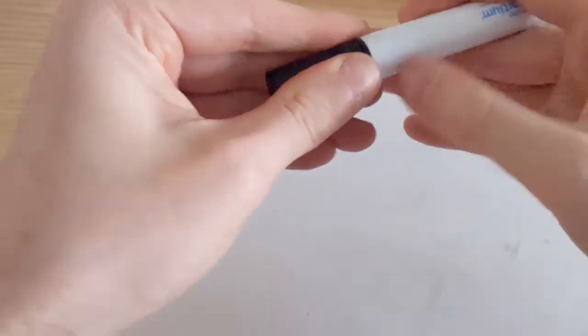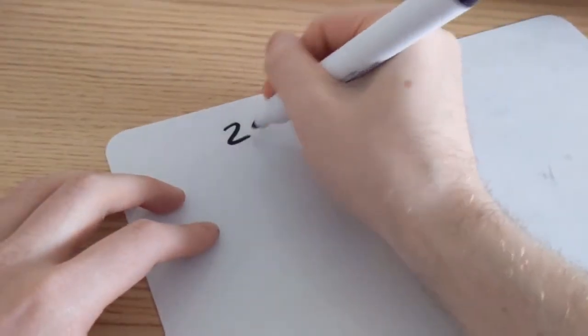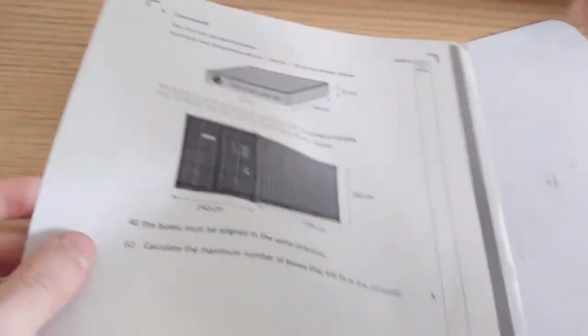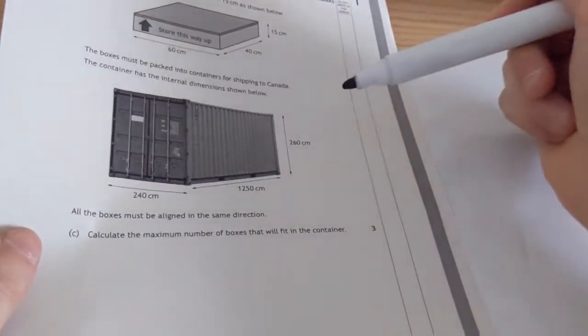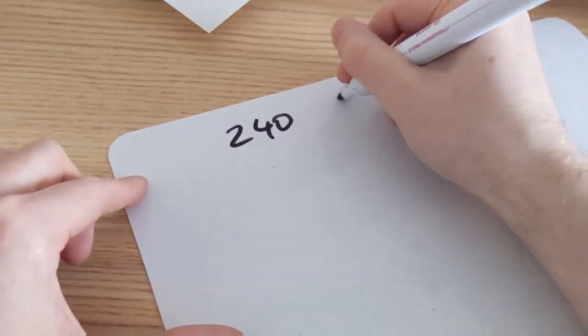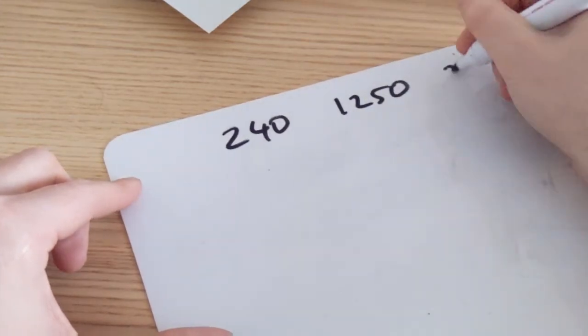Again, we're going to make a table. But this time we're only going to have two rows of dimensions. So we'll have our 240, we'll have 1250 and then 260.